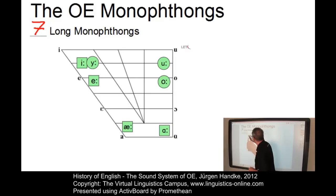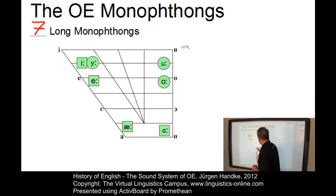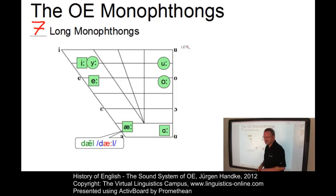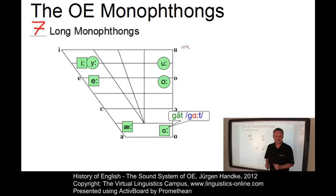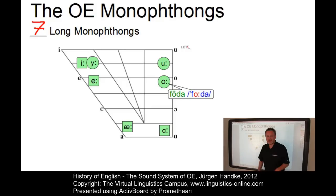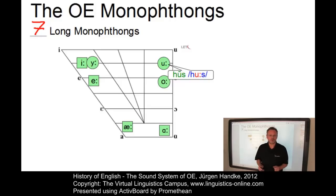Then we have a long Ē as in 'grēne', present-day English 'green'. Old English had a long Ǣ as in 'dǣl', present-day English 'deal'. There was a low back vowel, long Ā as in 'gāt', present-day English 'goat'. A mid-high back vowel, long Ō as in 'fōdor', present-day English 'food'. And a high back vowel, long Ū as in 'hūs', present-day English 'house'.